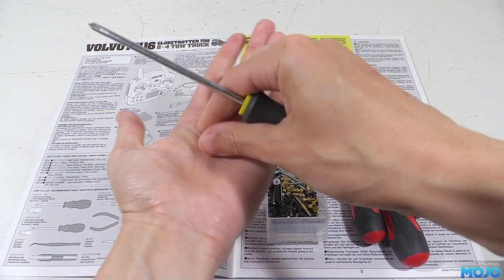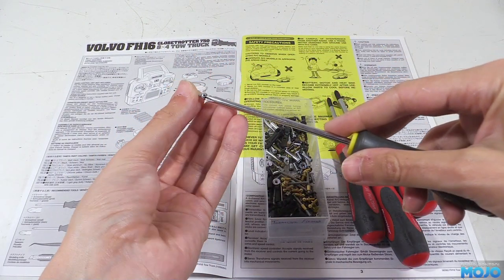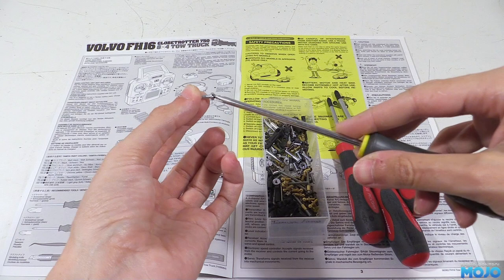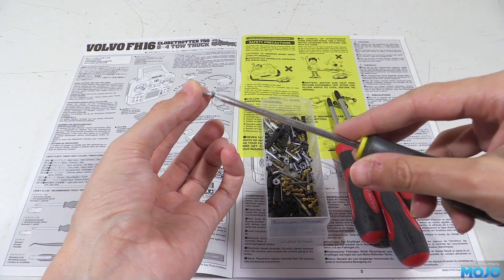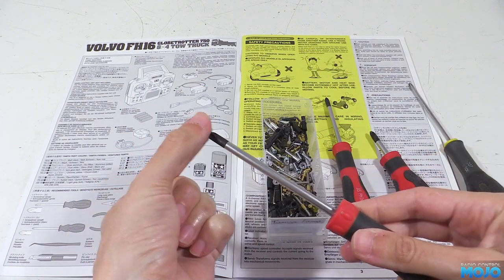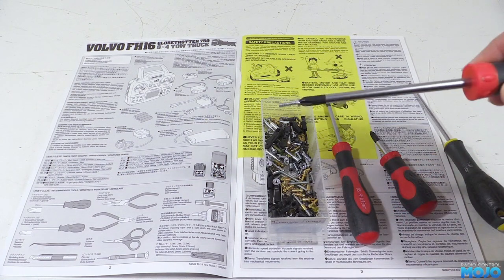As an example, if we pop the Phillips driver in the Tamiya screw, you can see it's wobbly and just won't stay put. But with the correct JIS driver, the screw will stay on the end of the driver quite happily. Much nicer.